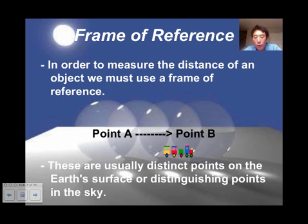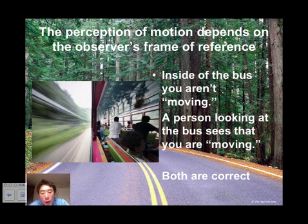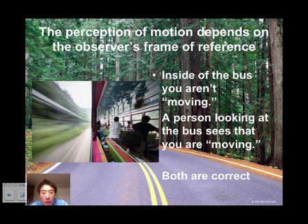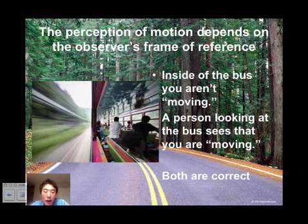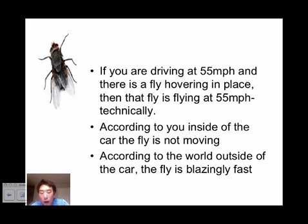These are just two random points that distinguish what is happening at either one of these points. There's a picture of a bus that is moving very fast. According to your frame of reference, it looks like the people inside the bus aren't moving at all, but if you were to step outside, the bus is moving extremely fast. Both perspectives are a correct frame of reference.